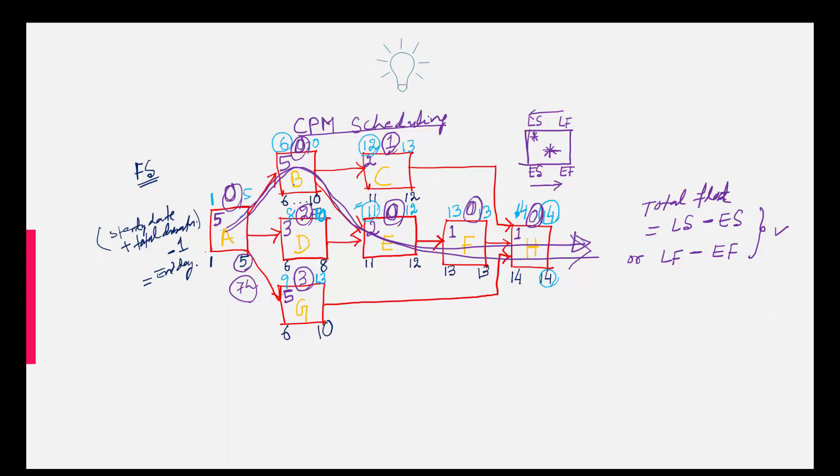So when you will delay by 2 days, this activity also will be shifted instead of 10th. It will be 10 plus 2, 12. And this is not 12, 12 plus 2, 14. This is not 13, 13 plus 2, 15. This is not 14, 14 plus 2, 16.